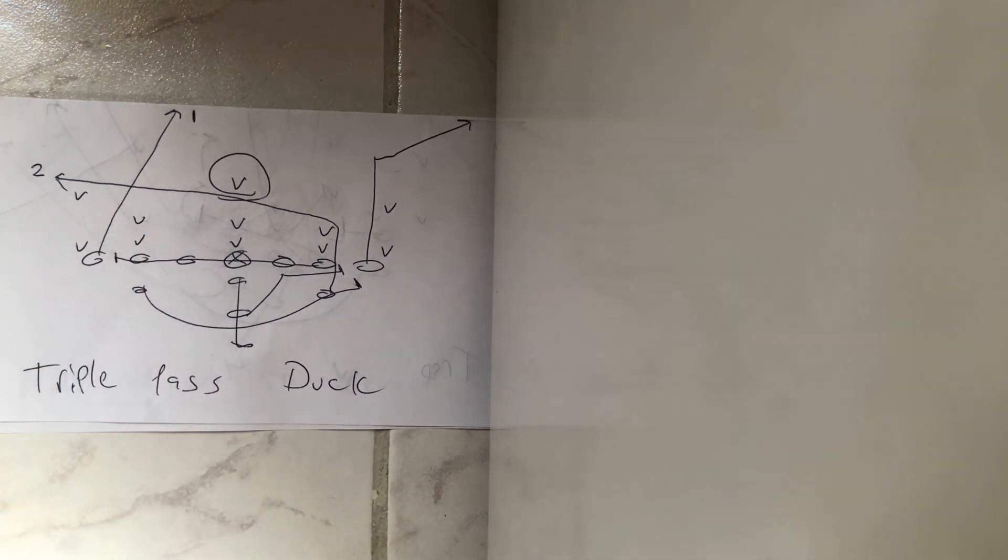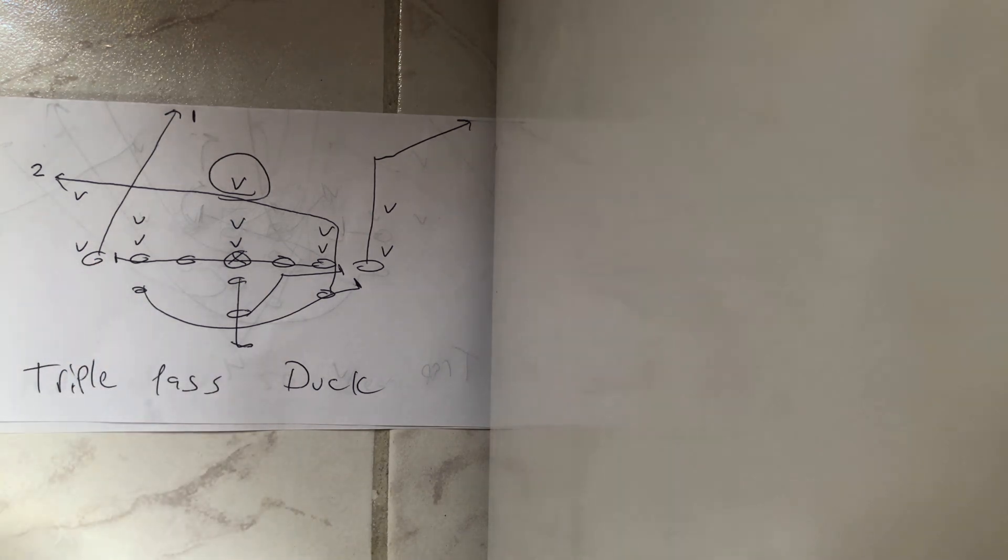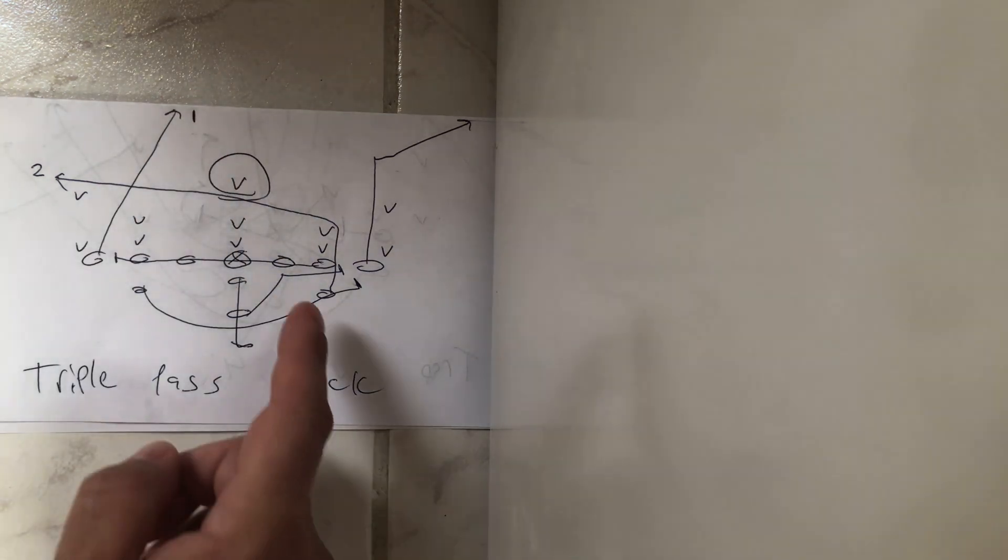But you're reading the safety. And it's very simple. It's a high level on the safety. You're going to throw the backside receiver the ball. Now, if he gets over the top of that, you're going to hit the drag.